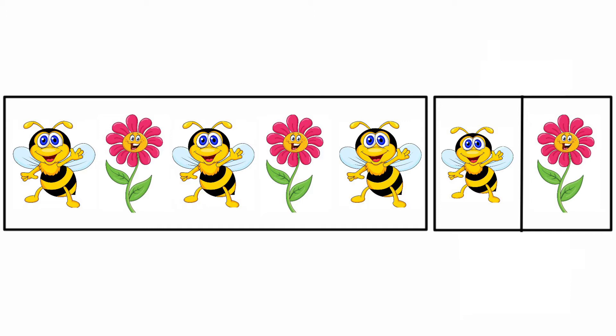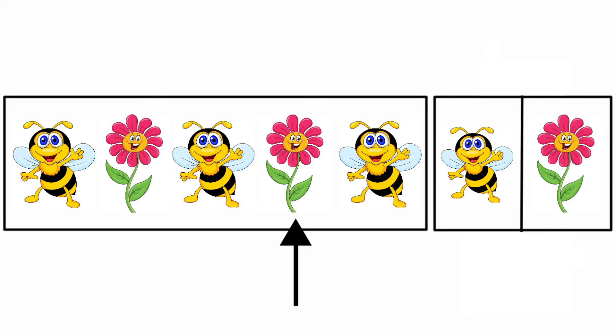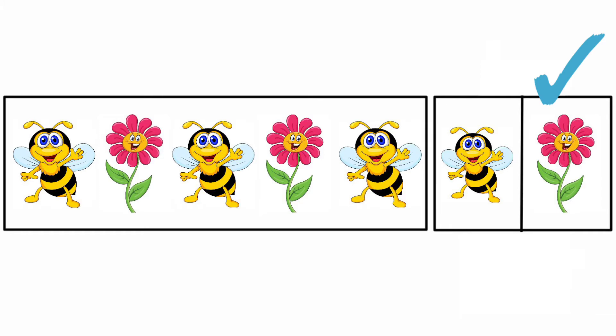Look at the first pattern: honeybee and then flower. It's the first set of pattern. We need to complete it fully. Look at the first set: honeybee, flower, honeybee, flower, honeybee. Then what comes next? Yes, correct. The next one is flower. So here we need to take flower, then complete the pattern.